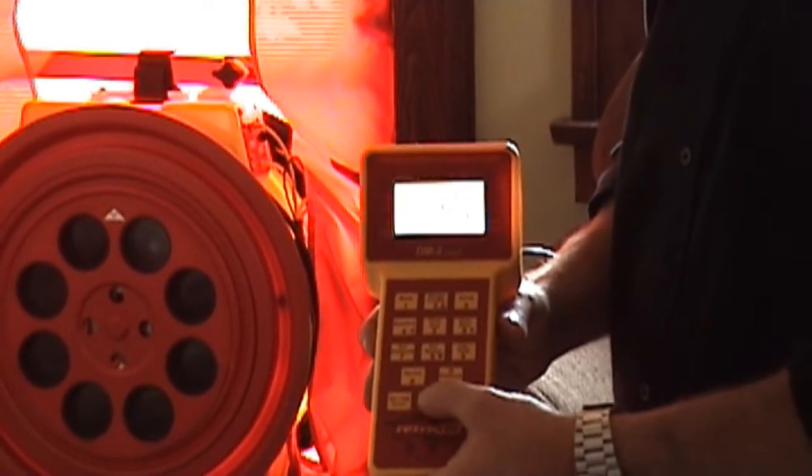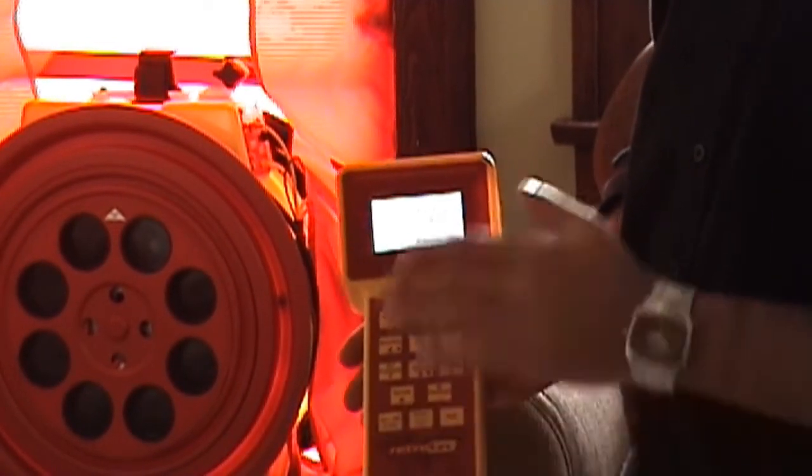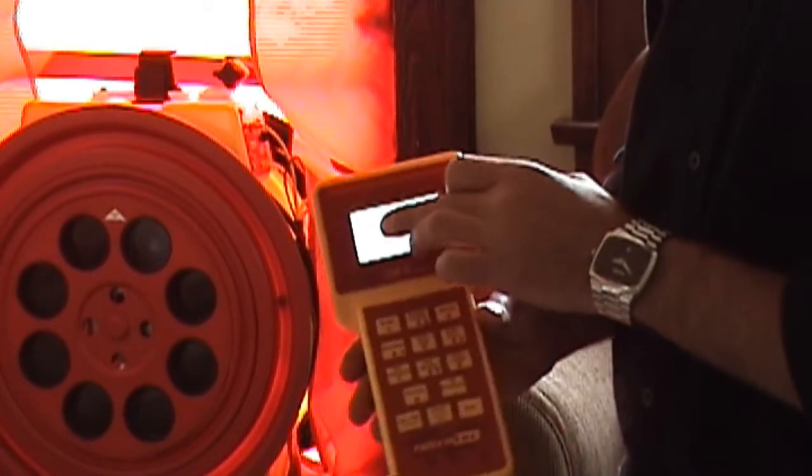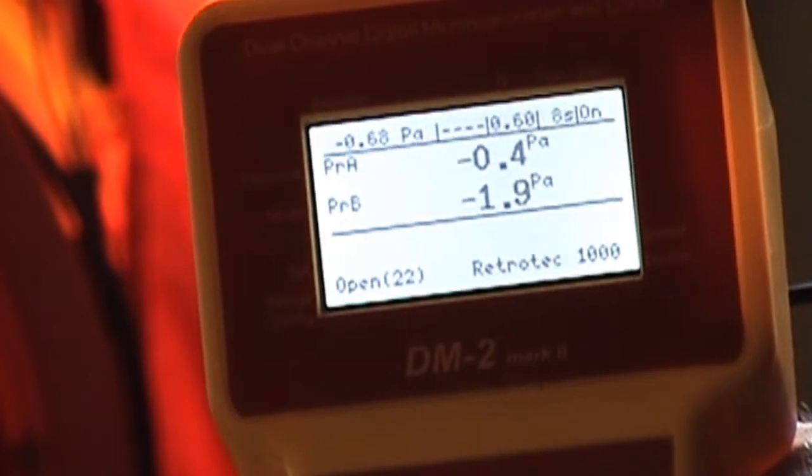So to finalize that we're going to press enter. Now a baseline pressure has been logged into this gauge and you see in the top left hand corner there's negative 0.68 Pascals.